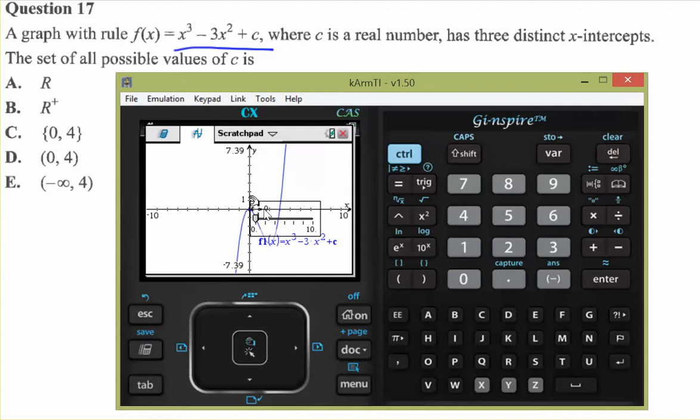And you can see that c equals 0. So at c equals 0, you can see the curve touch and turn, and then go up like that. So it only has two x-intercepts at c equals 0.